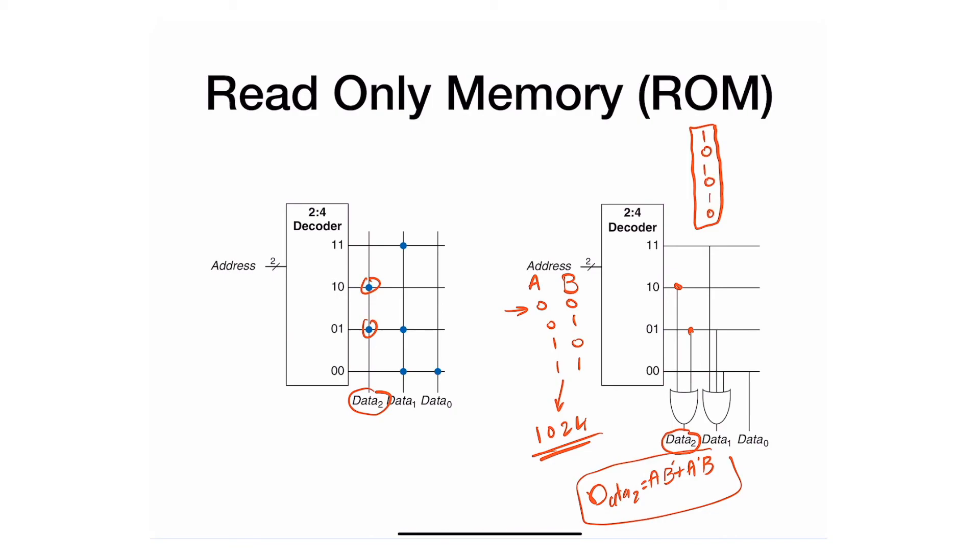You have 1024 of them, and this is just one exact logic function. If you want more logic functions, you put zero one, zero one, and this will give you another function. Take a look at this one and figure out what type of gate it gives you—maybe it gives you a gate, maybe not.